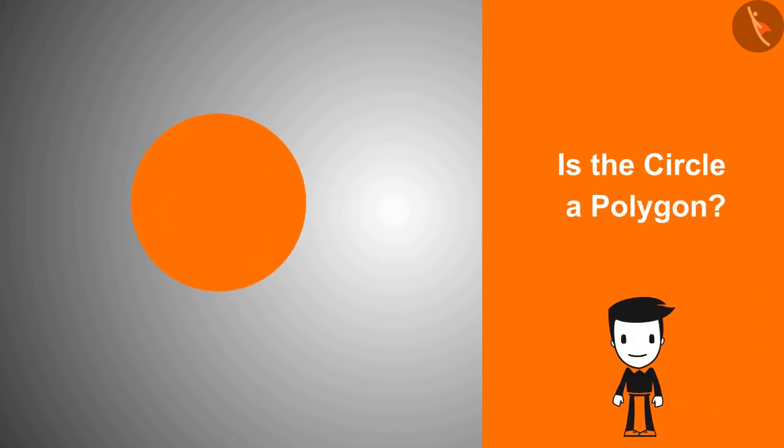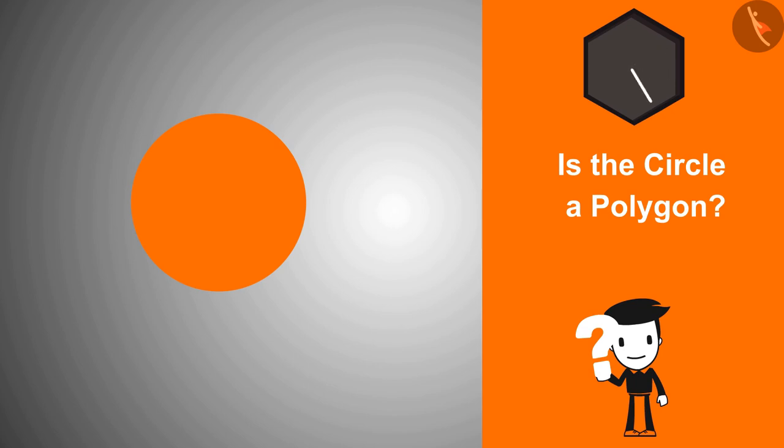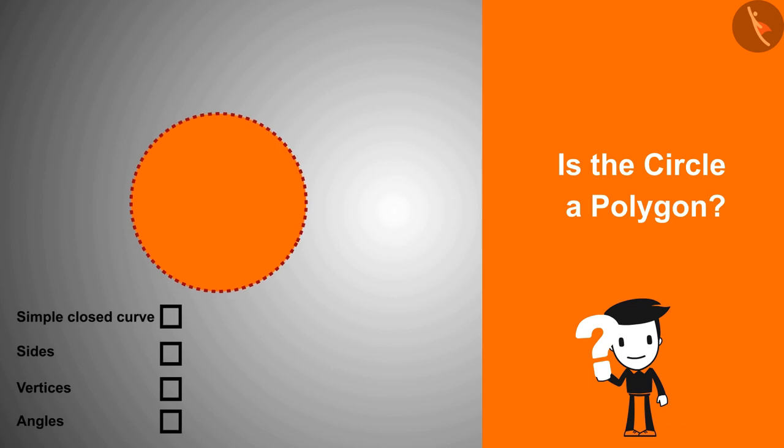Is the circle a polygon? The circle is a simple closed curve. Does it have sides, vertices, or angles? So it is not a polygon.